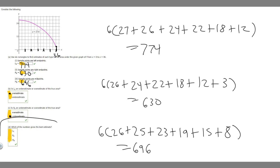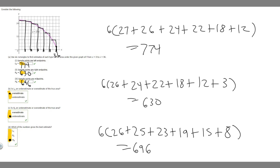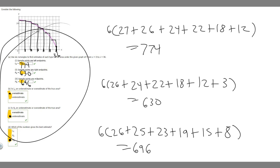The last part asks which of the numbers gives the best estimate. If we do the midpoint of all the intervals, it should look something like this — we take the mid-value of each. Compared to the other methods, the midpoint is going to be a much better estimate because we're only going over a little bit. The midpoint is just a better way to estimate, so M of 6 gives us the best estimate. These are the answers to this problem and how you solve it.